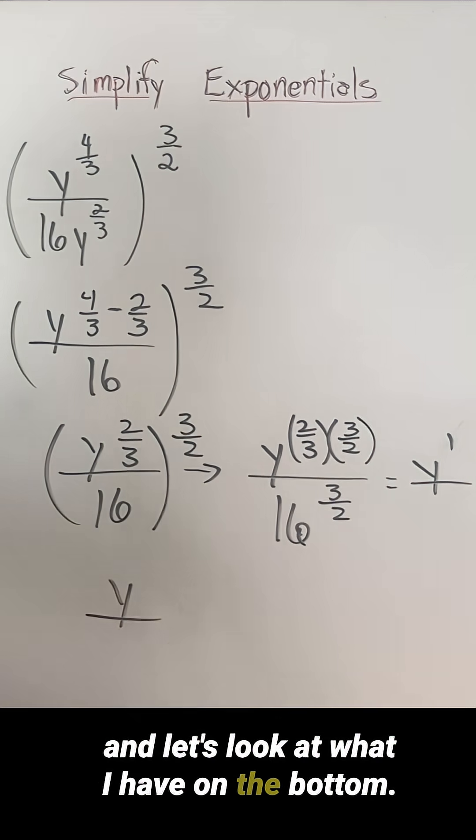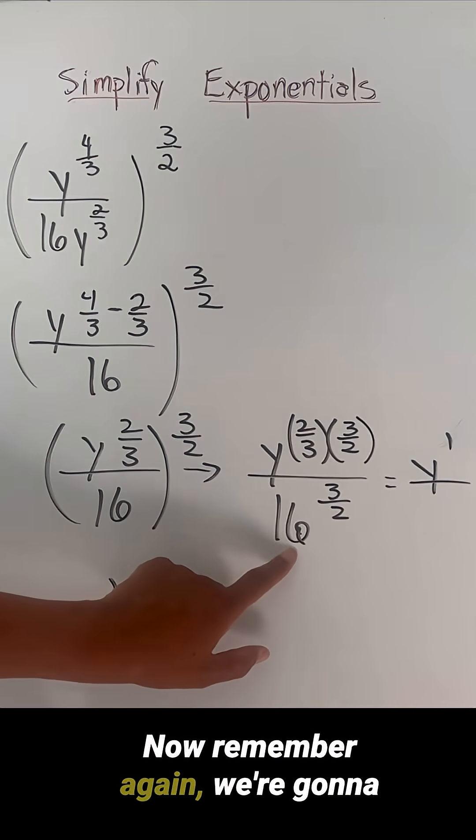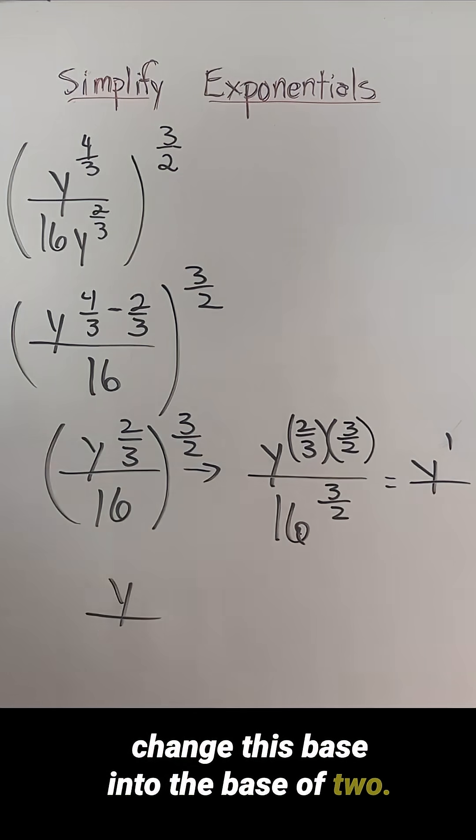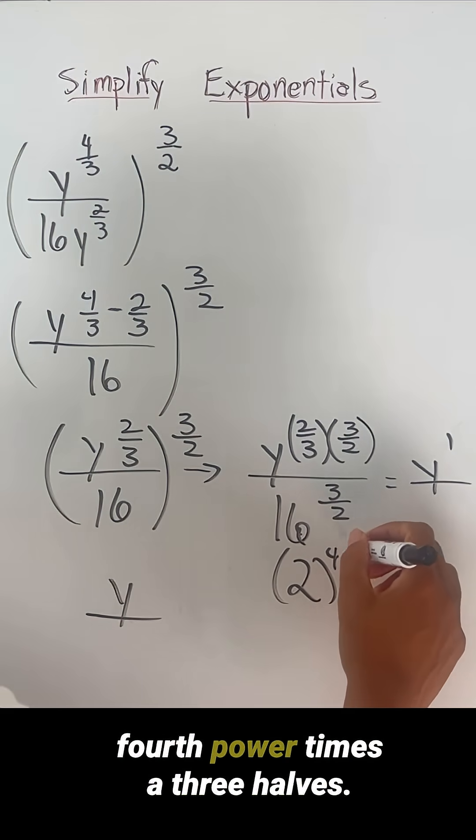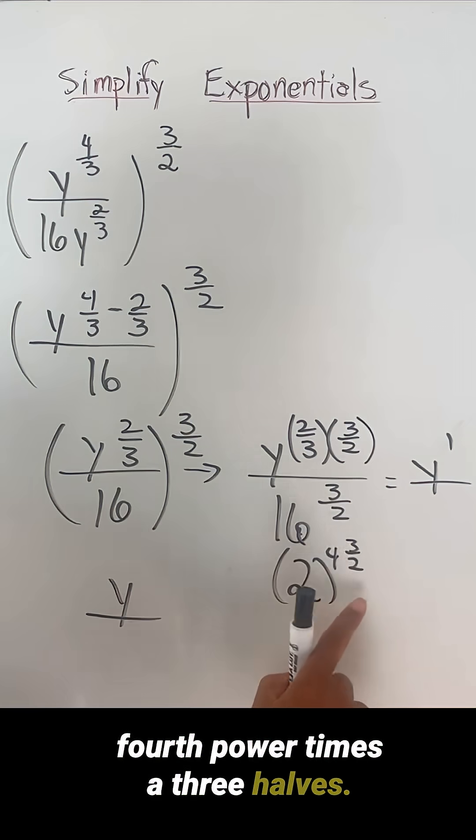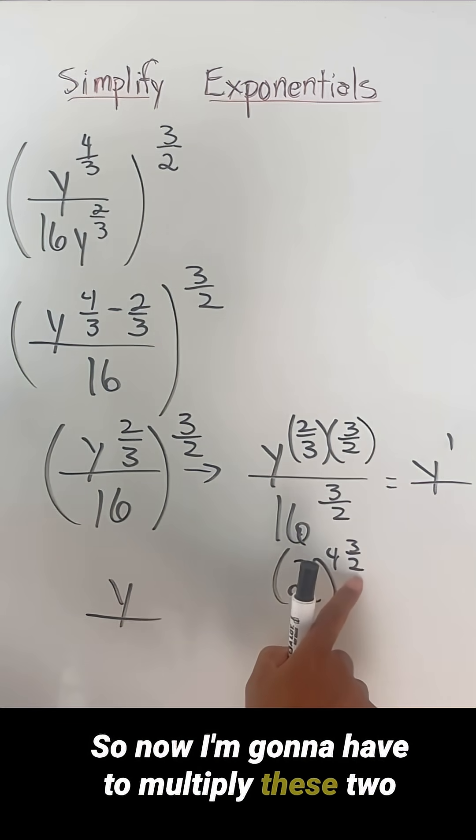And let's look at what I have on the bottom. Now remember, again, we're going to change this base into the base of two. So this is like having two to the fourth power times the three halves. So now I'm going to have to multiply these two powers.